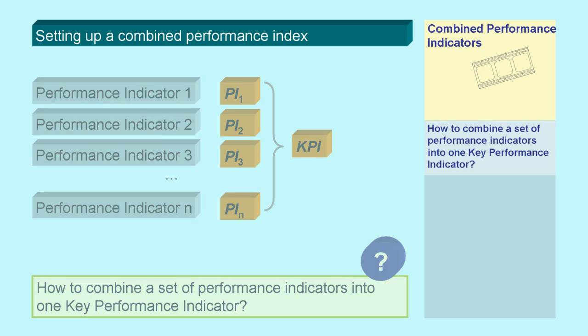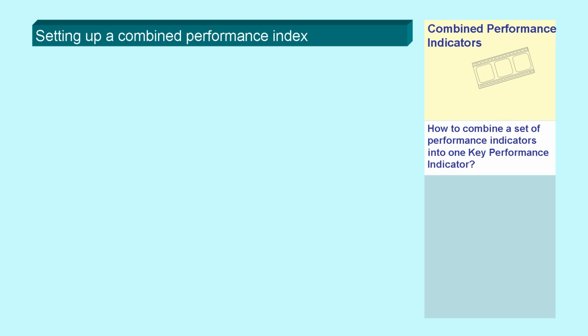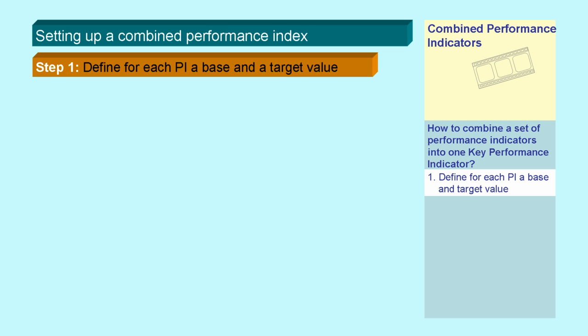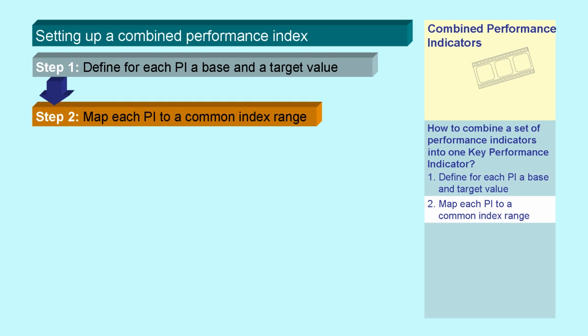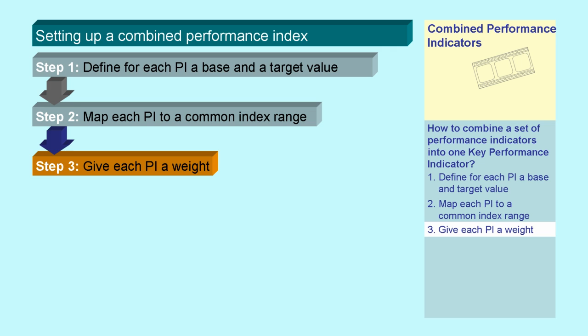Here an overview of the necessary steps. First, you need to define a base value and a target value for each individual indicator. Then, you map each indicator to a common index range and give each of them a weight to calculate the weighted index values.